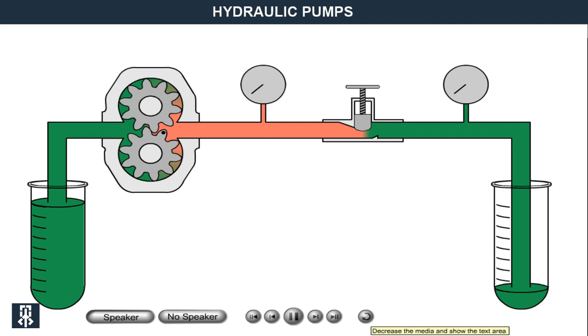When it comes to hydraulic pumps, one speaks of pumps with fixed displacement and pumps with variable displacement. Displacement refers to the fluid amount that is moved during a pump revolution or a pump cycle.